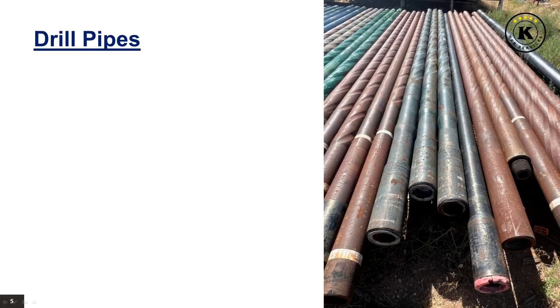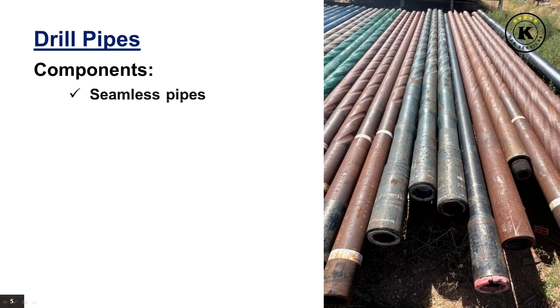Drill pipes, essential in the drilling process, consist of seamless pipes and tool joints. Seamless pipes provide structural integrity, while tool joints connect the pipes, enhancing overall durability and functionality.